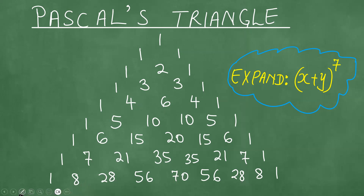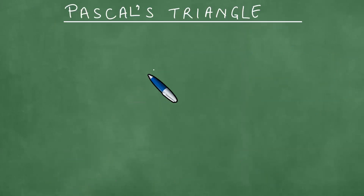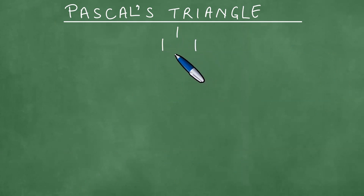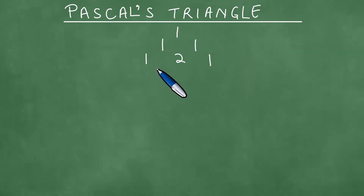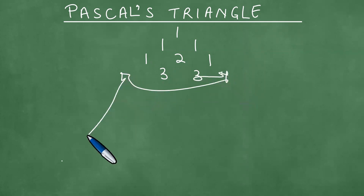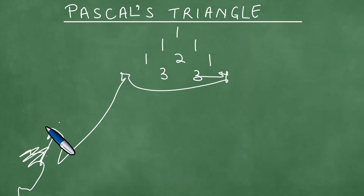We'll spend some time on how to construct this triangle. We've seen that we begin with the number 1, and you put 1s like this. If you add these 1s, you get the number 2, and you put 1s like that. Let me just clean this up.